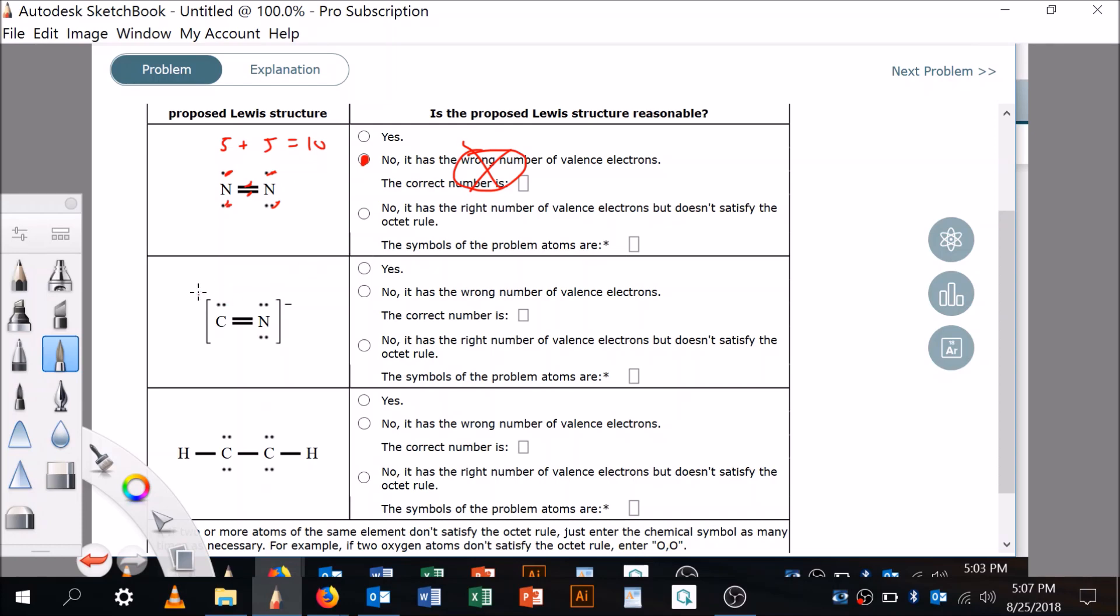Okay. So let's move on. Carbon is in group 4, nitrogen is in group 5, and then we've got an extra electron. So I need 10 valence electrons. 2, 4, 6, 8, 10. 2, 4, 6, 8, 10. So I do have the right number of valence electrons. So it's not this.